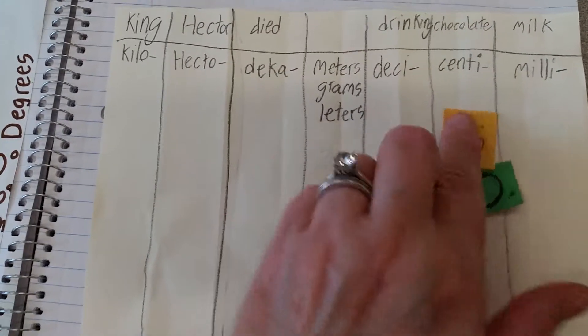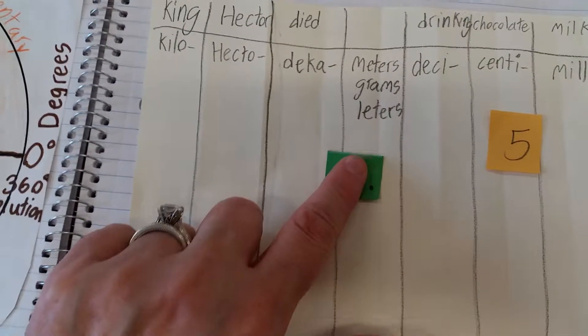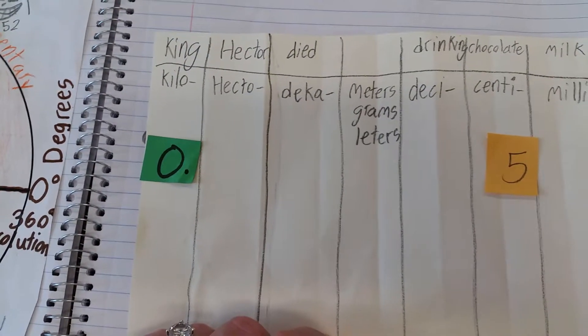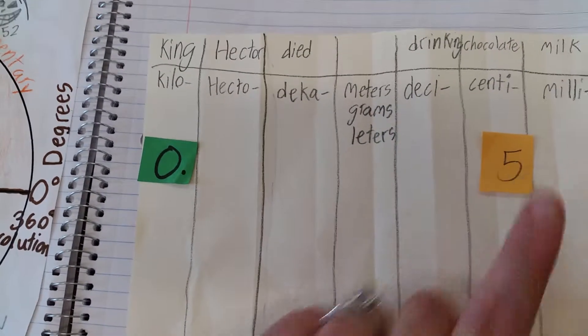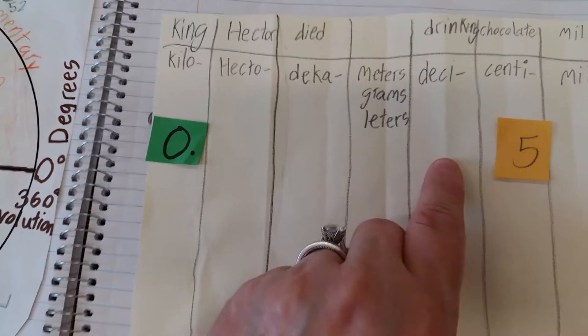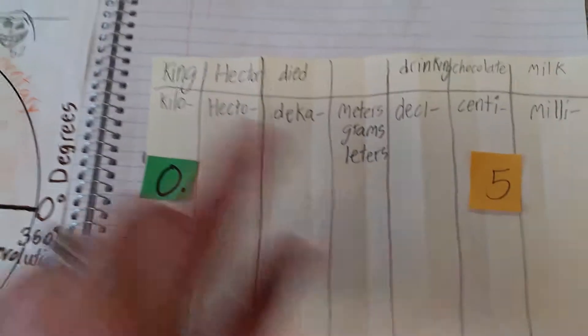Again, I'm going to hop my little froggy. Boink, boink, boink, boink, boink, boink. And as you can see, five centimeters is .00005 kilometers.